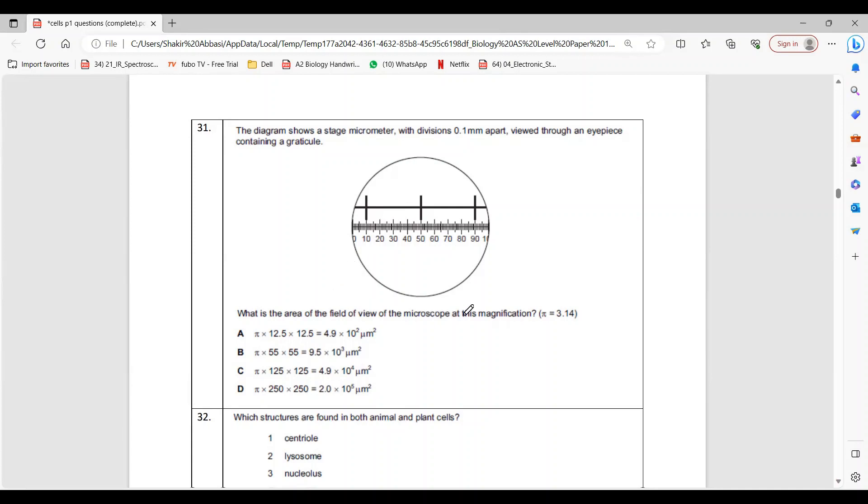Question 31 is about area. Area is pi r squared, so for that we need to find radius. Radius is half of diameter. What's the diameter that we need to find? Diameter is from 0 to 100, but we don't know calibration. We know this is stage micrometer and this is eyepiece graticule. Let's compare them: graticule versus stage.